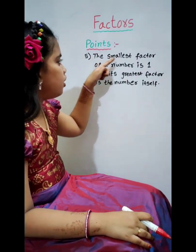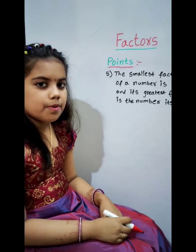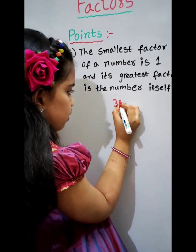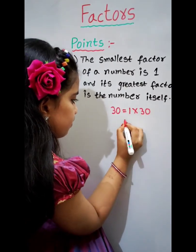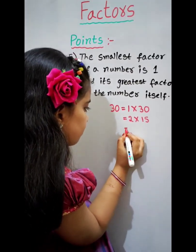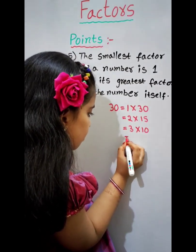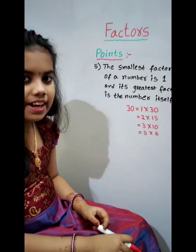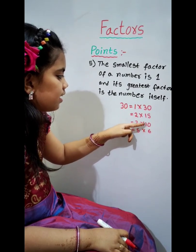The fifth one is: the smallest factor of a number is 1 and its greatest factor is the number itself. For example, factors of 30: 1 times 30 equals 30, 2 times 15 equals 30, 3 times 10 equals 30, 5 times 6 equals 30. The factors of 30 are 1, 2, 3, 5, 6, 10, 15, 30.